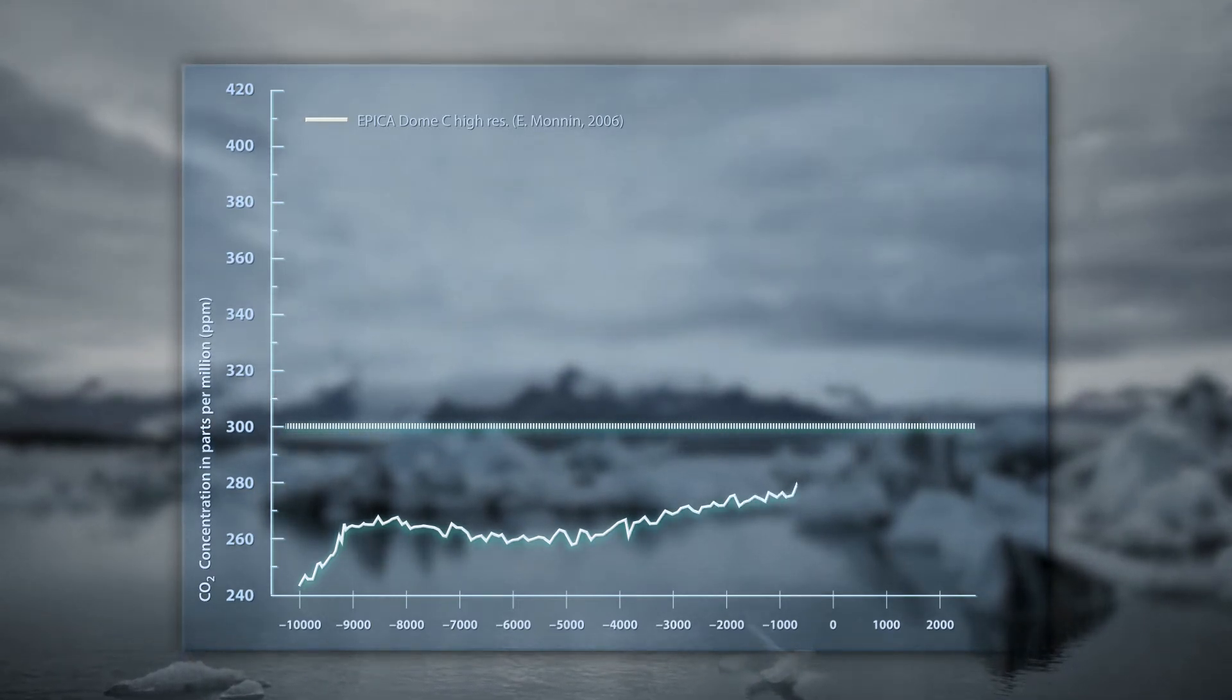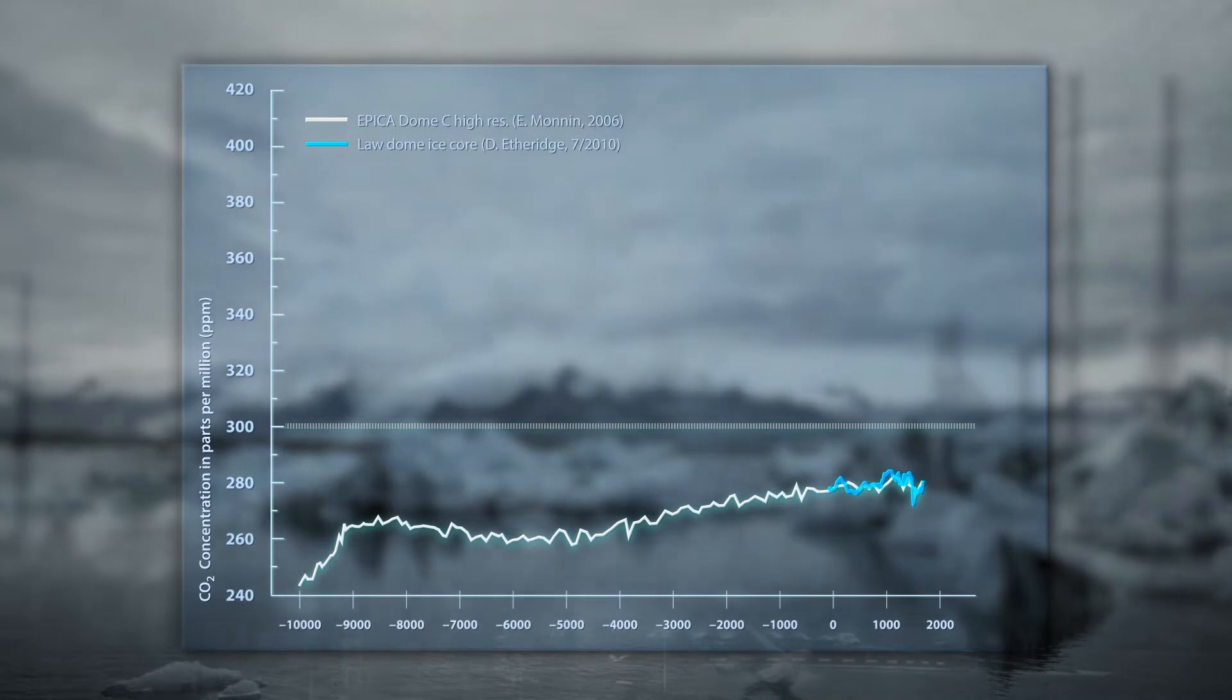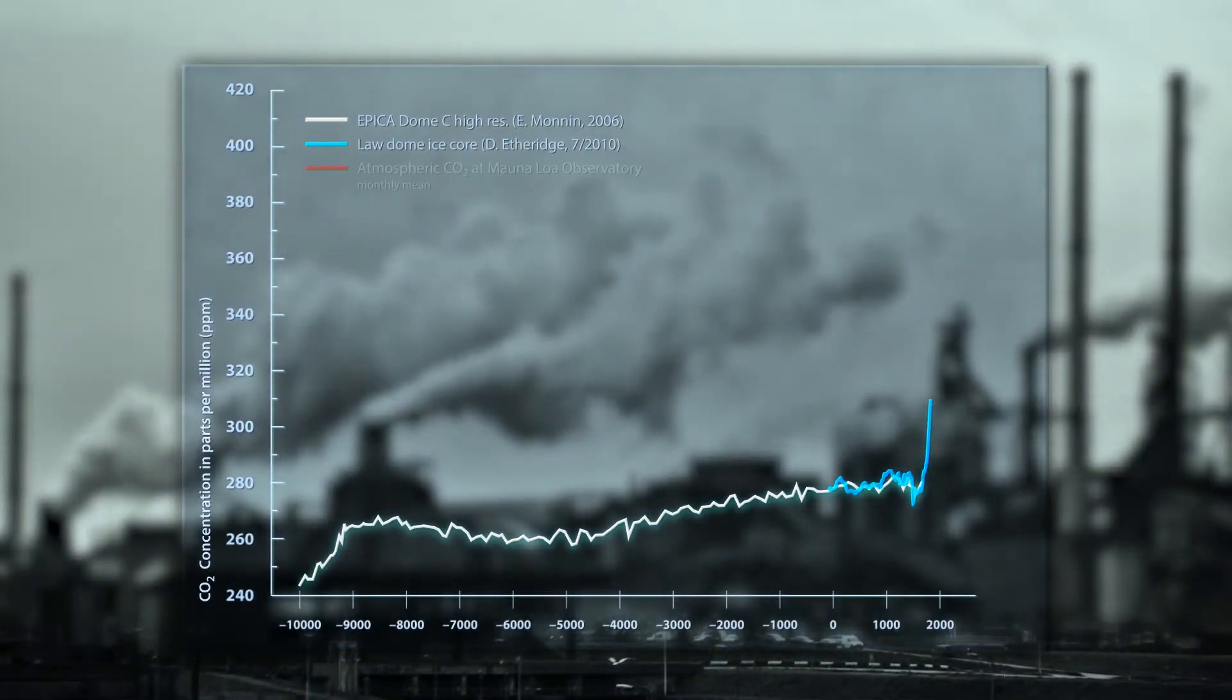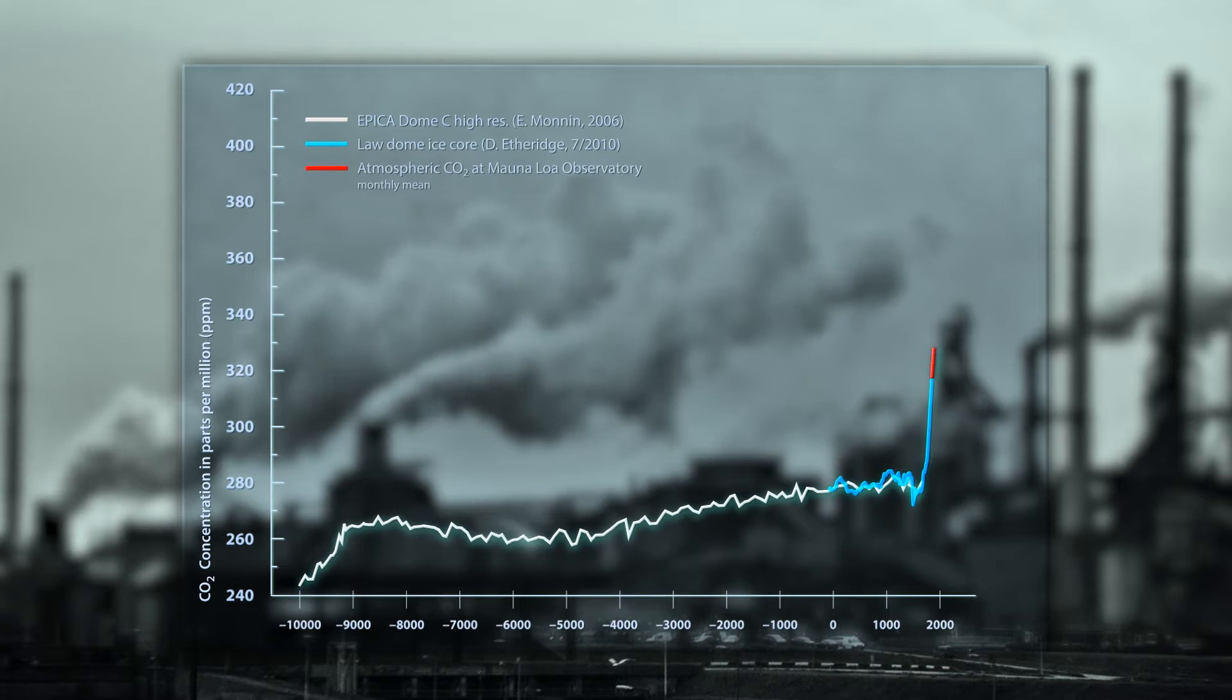Or, in scientific terms, the concentration of CO2 in the atmosphere never exceeded 300 parts per million. Really, never more than 300. Never. That is, until roughly 170 years ago.